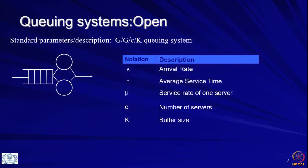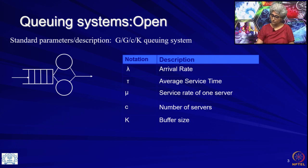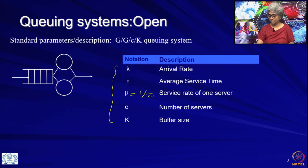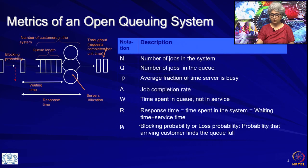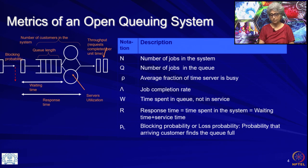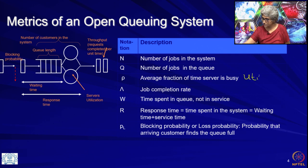Here again are the slides to remind you of all the parameters of our queuing systems. All the analysis is done in terms of these parameters: the arrival rate, the service time, the service rate which is 1 over the service time, the number of servers, and the buffer size. The metrics are always: number of jobs in the system, number of jobs in the queue, utilization (also the fraction of time the server is busy), throughput, time spent in queue, time spent in queue and service, and blocking probability. Recall that we call this utilization and this is throughput.